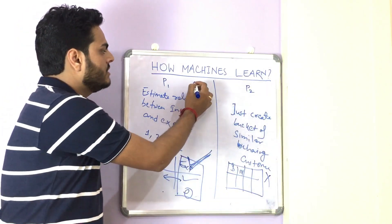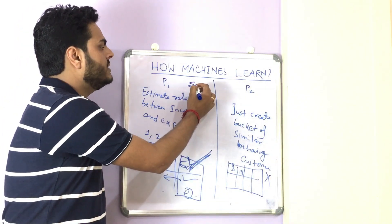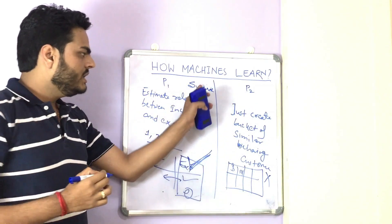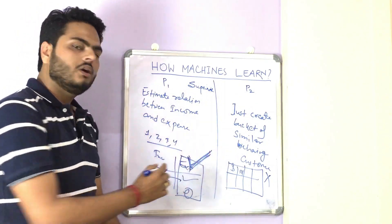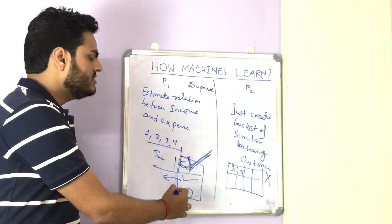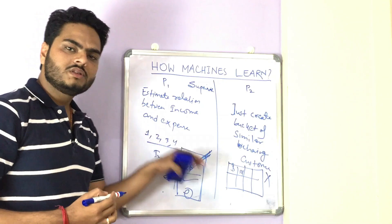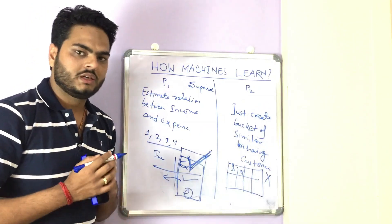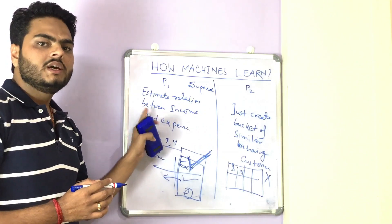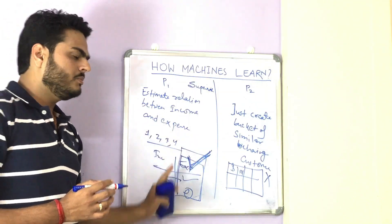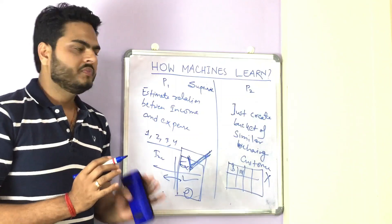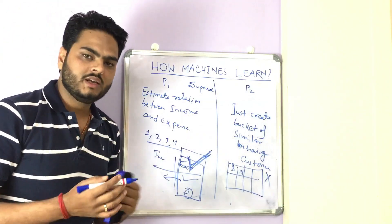This is called a supervised machine learning algorithm — a process where you have something to predict or estimate, where you have a column that is labeled. This is called a labeled column because it is something we are interested in predicting. Problems where we have a labeled column in the data are called supervised machine learning.